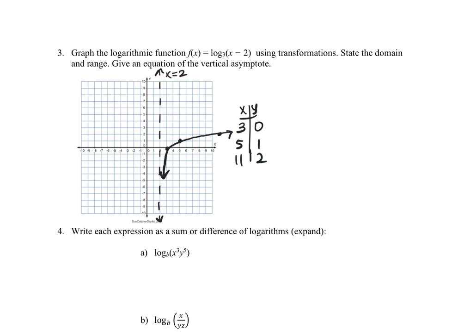The domain is affected by the vertical asymptote, so the domain is from 2 to infinity (not including 2). The range of any logarithmic function's graph is all real numbers.